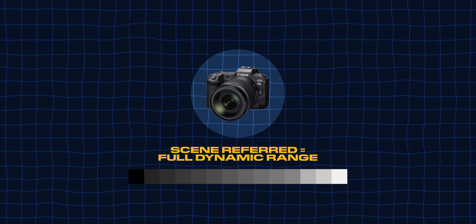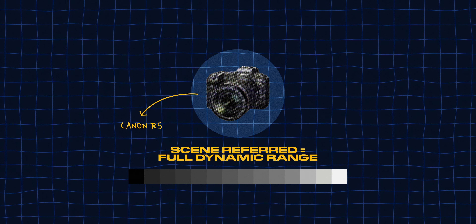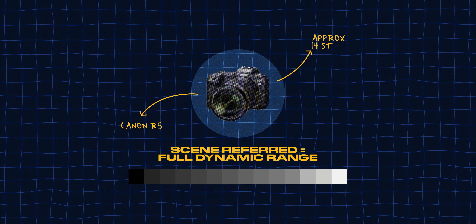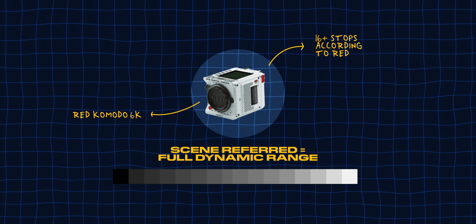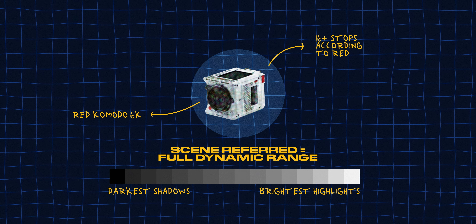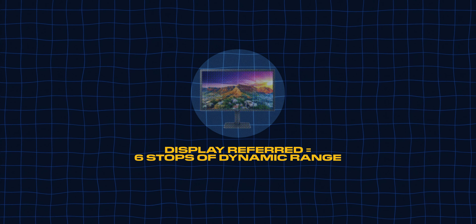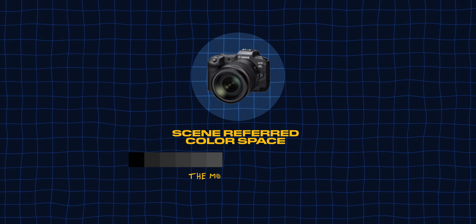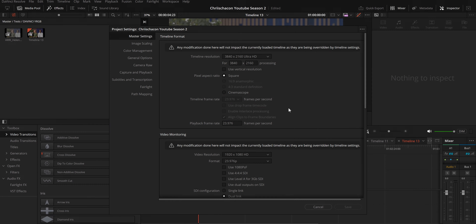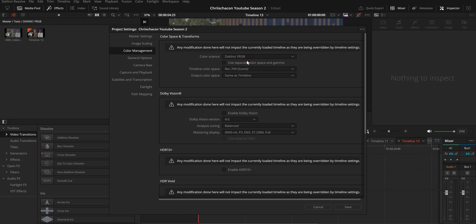We'll talk about the difference between a scene-referred color space and a display-referred color space. Working in a scene-referred color space maintains the full dynamic range of your footage. So if you're shooting on a Canon R5, which has approximately 14 stops of dynamic range, or a Red Komodo with 16 plus stops, you'll get the most out of your footage without losing information in the darkest shadows and brightest highlights. A display-referred color space limits you to about six stops of dynamic range because it's meant for final viewing. Scene-referred gives you the most flexibility and control over your color grading.